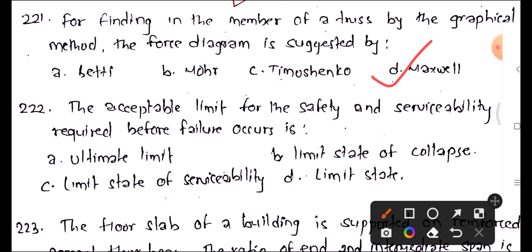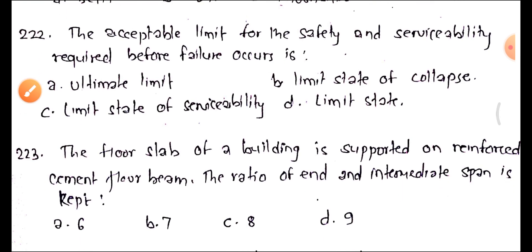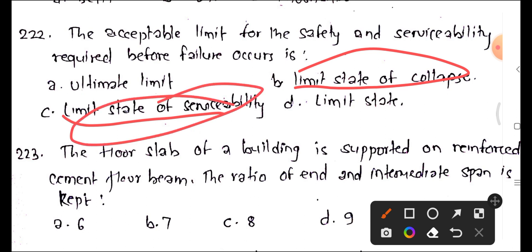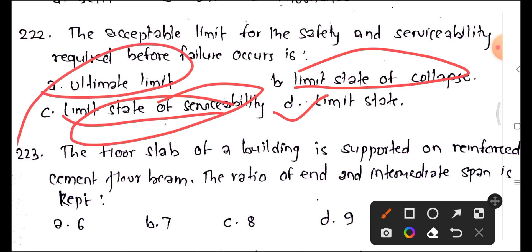Question 222: What is the acceptable limit for safety and serviceability required before failure occurs? Option A is ultimate limit state, option B is limit state of collapse, option C is limit state of serviceability, option D is limit state. The answer is option C — limit state of serviceability, because it covers both collapse and serviceability.